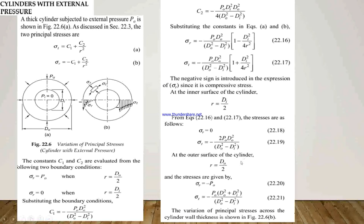If we consider the outer surface of the cylinder, where radius equals outer diameter divided by 2, substituting into equations 22.16 and 22.17, we again get sigma_R and sigma_T. Sigma_R equals minus po and sigma_T equals minus po times (do² + di²) divided by (do² - di²). There is a variation of principal stresses across the cylinder wall thickness, and this variation is shown in figure 22.6B.